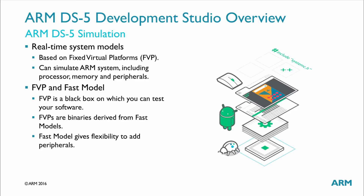FVPs are binaries derived from Fast Models, though unlike Fast Models they are not customizable. Fast Models give the flexibility to add complex peripherals, infrastructure, and Arm CoreLink interconnects along with a host of other Arm and third-party IP blocks. This gives software teams working on custom SoCs the ability to complete the majority of their software and integration ahead of the silicon availability.